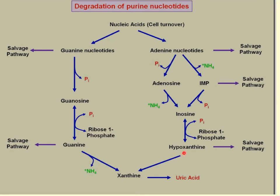Ultimately they're broken down to xanthine. The only time they're broken all the way down to xanthine is if adequate ATP and GTP are both present. If you don't have enough, they're going to go into the salvage pathway. But with adequate ATP and GTP, you get xanthine, and xanthine gets broken down to uric acid.